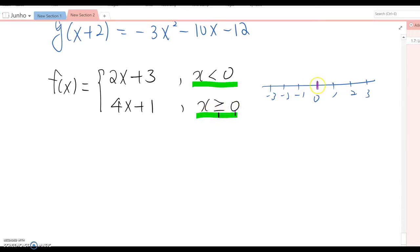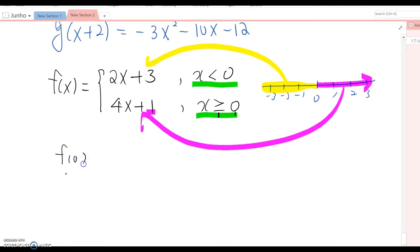That will follow this function basically, and any x value below zero will follow this function. Okay, so the first question: f(0). Then you need to analyze where the zero belongs - is it belongs to this interval or this interval? Obviously zero is equal to zero, therefore you're following this condition.